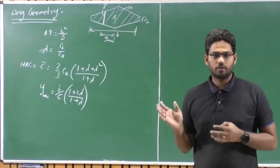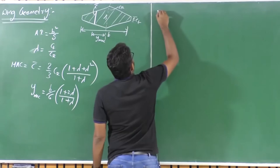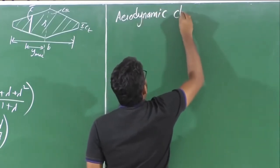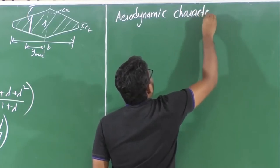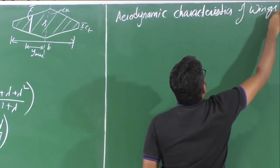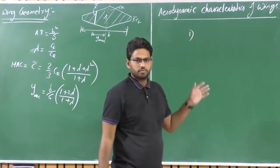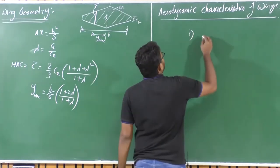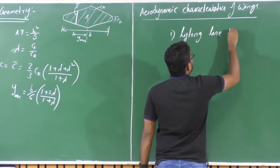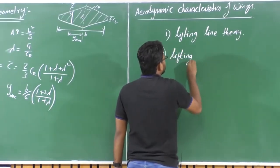First let us look at the theoretical aspects — how to figure out the lifting characteristics of a wing. There are two main theories that discuss the lifting characteristics of wings: the first one is lifting line theory and the second one is lifting surface theory.